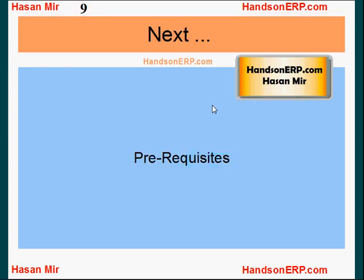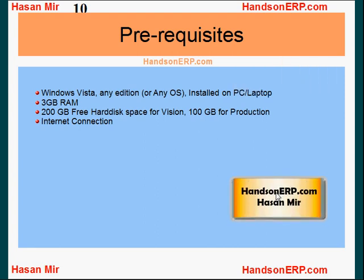For prerequisites, if you need a practice box, get a brand new computer with Windows Vista - any edition will do. You can also try this strategy on any operating system including Macintosh or Linux, but if you have Linux there's no point installing a virtual machine; just install Oracle directly on Linux. Make sure your computer has at least 3 gigabytes of RAM, because when you turn on the virtual machine it occupies lots of resources. We'll dedicate 2 GB to the virtual machine and 1 GB to your actual machine. You also need at least 200 gigabytes of free space for a vision installation and 100 gigabytes for a fresh installation.